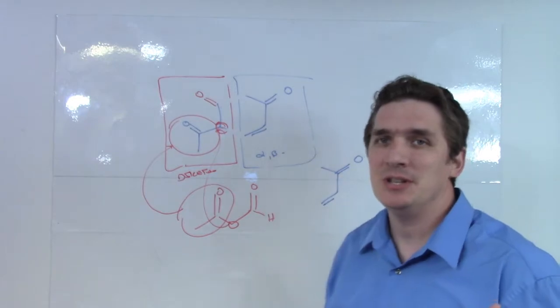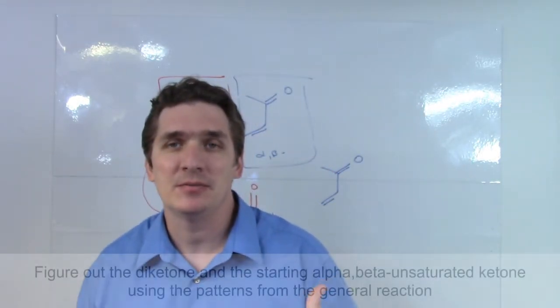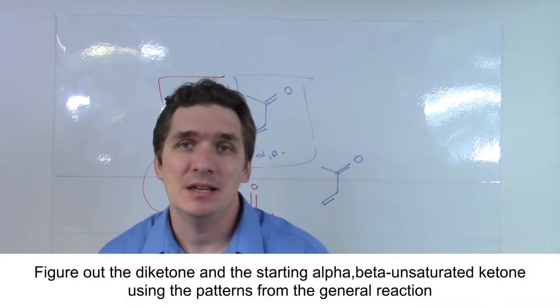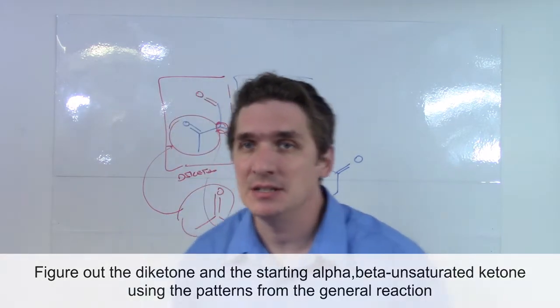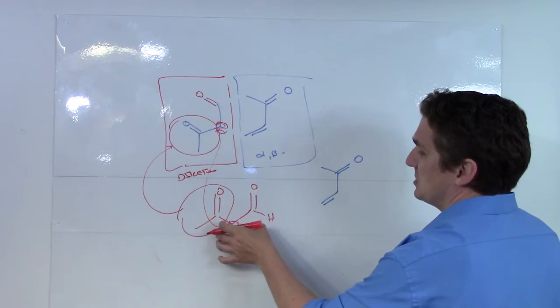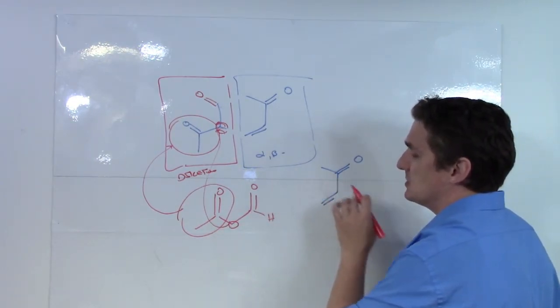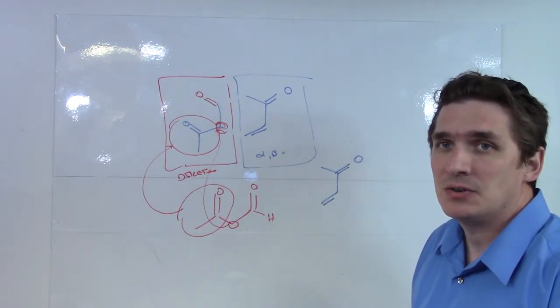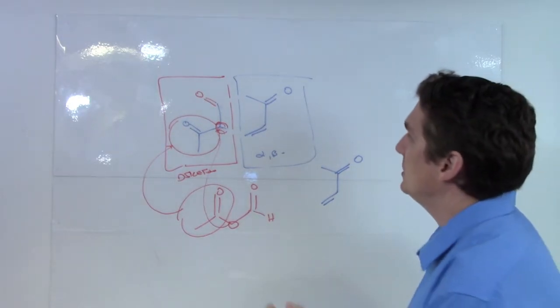So this is how you reverse engineer the Michael addition, Michael reaction, plus the Robinson annulation. So for the Michael reaction, this is the starting diketone. This is the starting alpha-beta unsaturated ketone. Again, how did we come to that? Well, there are two alpha carbons relative to the ketone.